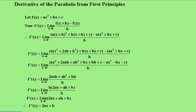All right, now after collecting like terms here, you'll notice that the ax squared, this one here, goes out with this one. The bx goes out with this one. And the c goes out with that one. And that leaves us with 2axh plus ah squared plus bh.